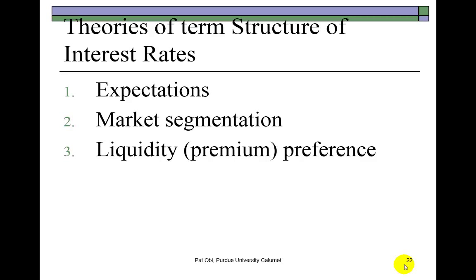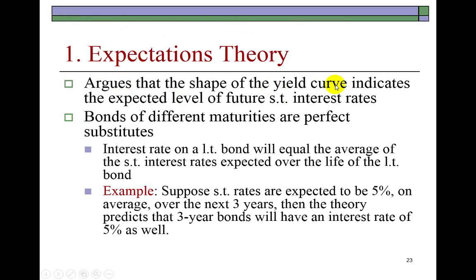Why do we have different shapes of the yield curve — upsloping, downsloping, or flat? There are three different theories that help explain the different shapes. The expectations theory argues that the shape of the yield curve indicates the expected level of future short-term interest rates, arguing that bonds of different maturities are perfect substitutes. This means that the interest rate on a long-term bond will equal the average of the short-term interest rates expected over the life of that bond.